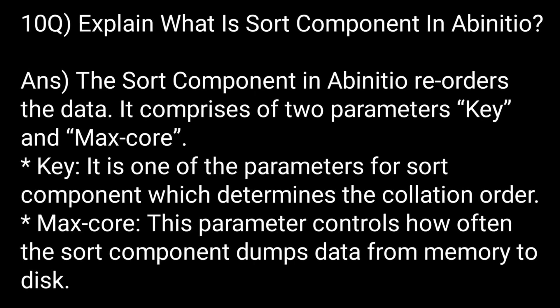Explain what is the sort component in Ab initio. The sort component in Ab initio reorders the data. It comprises two parameters: key and max-core. Key determines the collation order, while max-core controls how often the sort component dumps data from memory to disk.